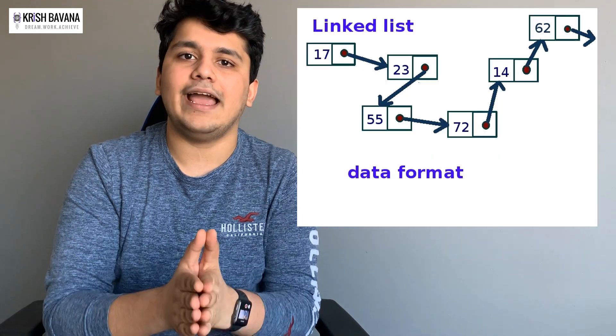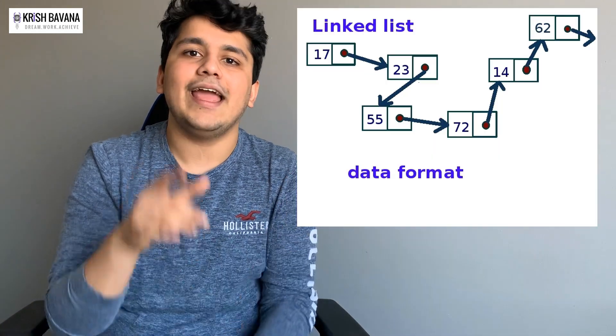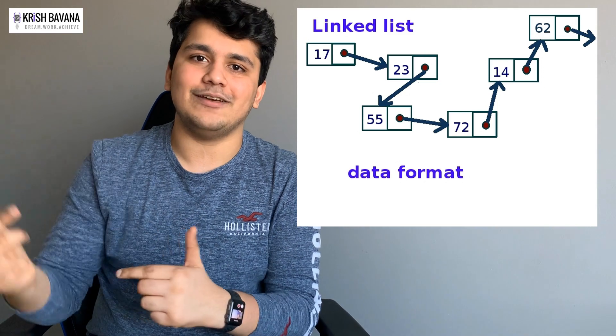Coming to linked lists: a linked list is a structure where we have a node and each node points to the next one until it hits a null pointer. Linked lists are very powerful data structures — everything is attached block by block. For example, if you're searching for something the Big O is O(N), and updates are also much easier because of this powerful data structure.